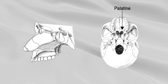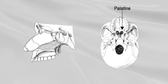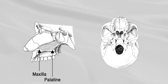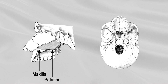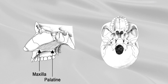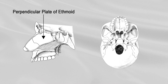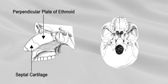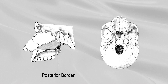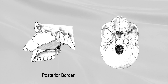The inferior border articulates with the nasal crests of the maxillae and palatine bones. The anterior border is the longest and slopes downward and forward; its upper half is fused with the perpendicular plate of the ethmoid, and its lower half is grooved for the inferior margin of the septal cartilage of the nose. The posterior border is free and separates the two posterior nasal openings.